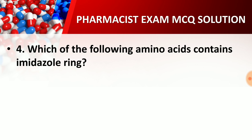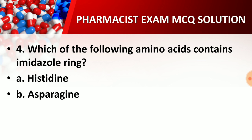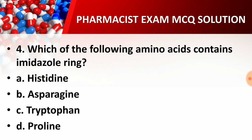Question number four: Which of the following amino acids contains an imidazole ring? Options are — option A, histidine; option B, asparagine; option C, tryptophan; option D, proline. The right answer is option A, histidine. Histidine contains an imidazole ring in its structure.